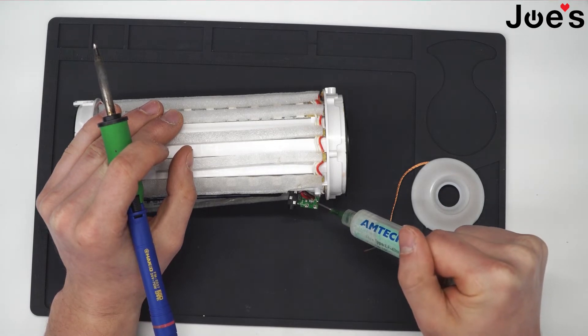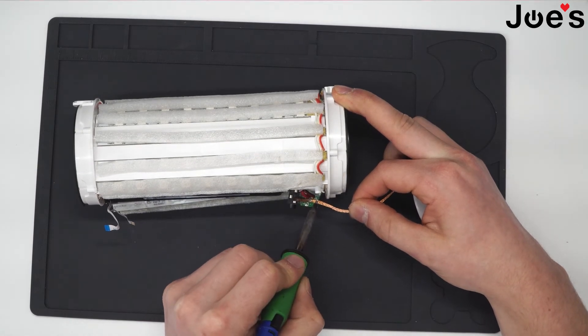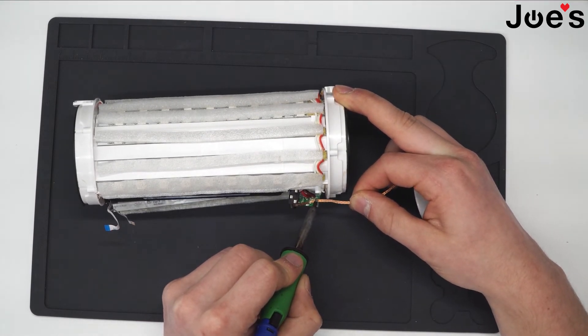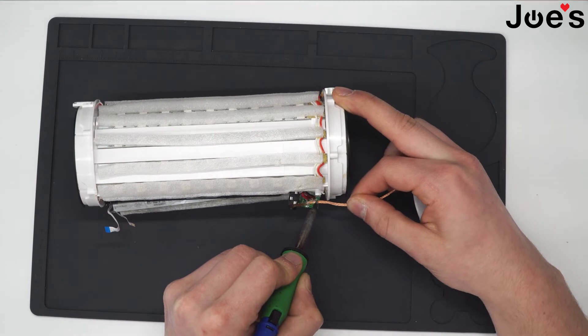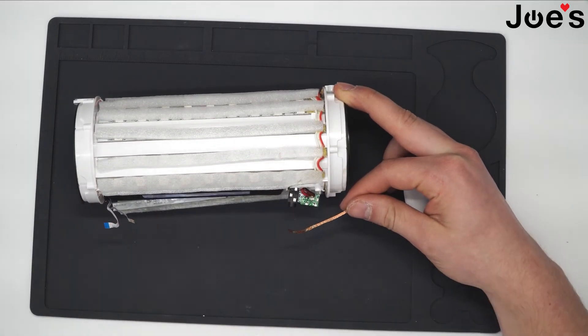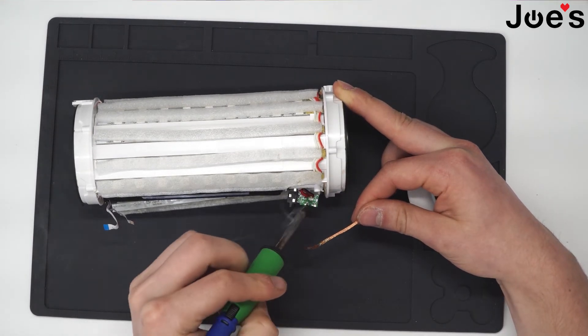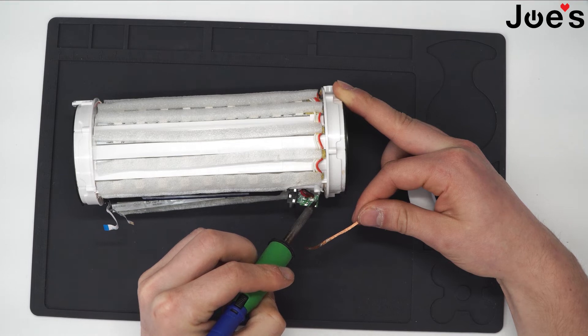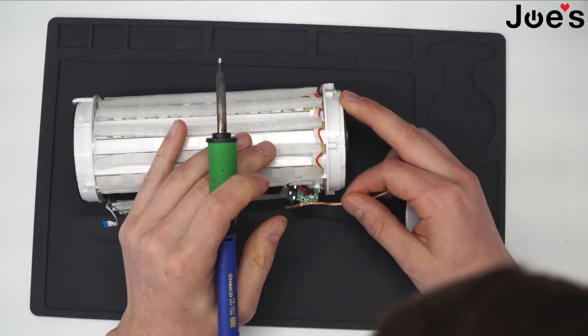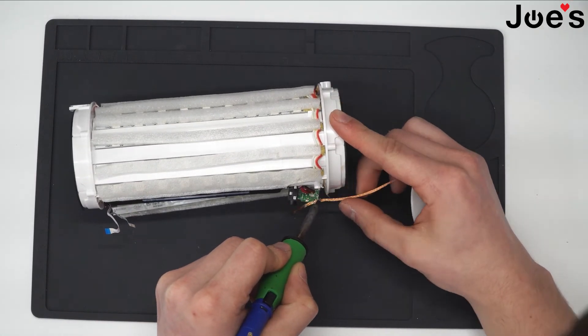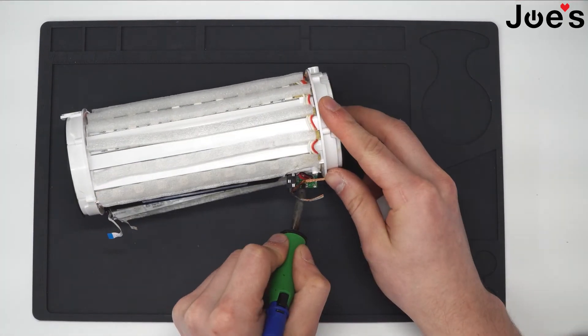It helps melt the solder quicker. I'm not pressing too hard - just letting the iron lay on top of it and do its work. If it's taking a little bit, you can add some more of your own solder. This just helps to soak up everything. That looks good.